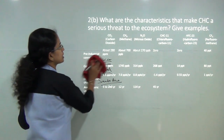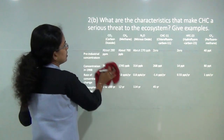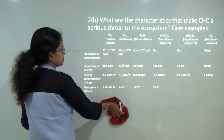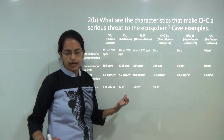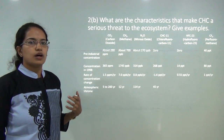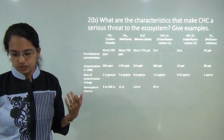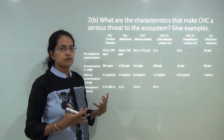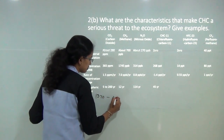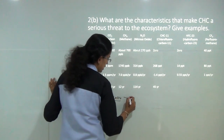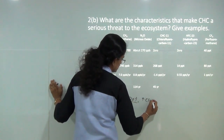The next question is: what characteristics make CHCs a serious threat to the ecosystem? CHCs — hydrocarbons — lead to generation of a greenhouse effect, resulting in global warming and melting of snow. Between 1970 and 2004 there was approximately a 70 percent increase in CHC gases.